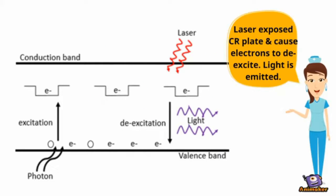During readout, the laser light stimulates the trapped electron back up to the conduction band where it causes the electron to de-excite and fall to low energy state. The electrons give off energy and light is emitted.